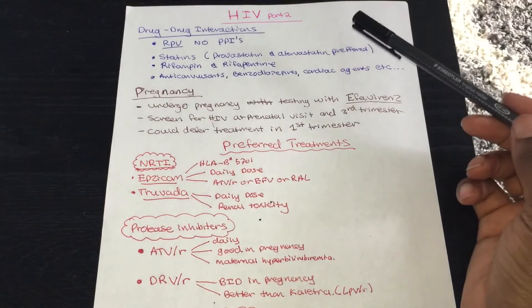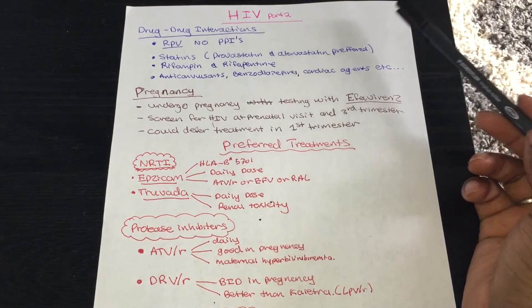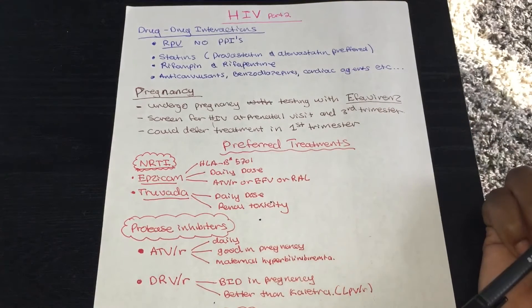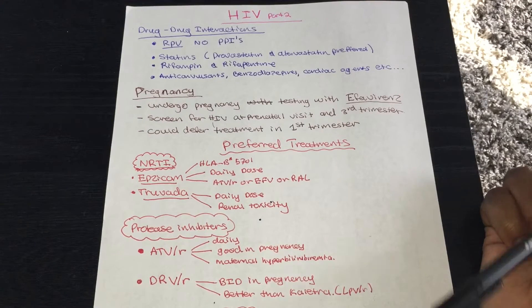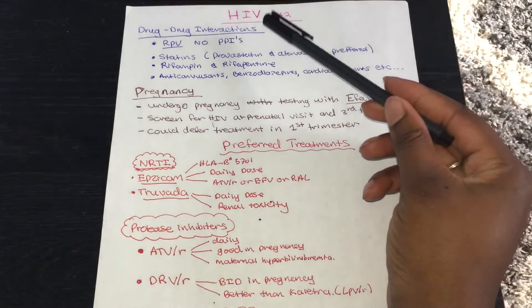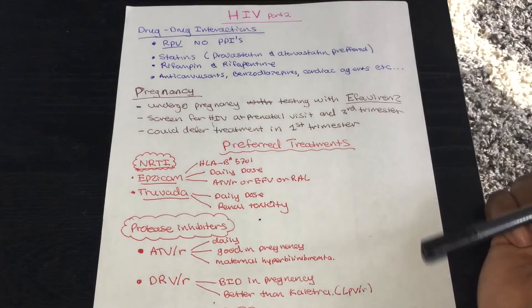Hi and welcome to HIV part 2. First we will go into drug-drug interactions. One important interaction to remember is rilpivirine — you should avoid PPIs such as omeprazole with rilpivirine completely.